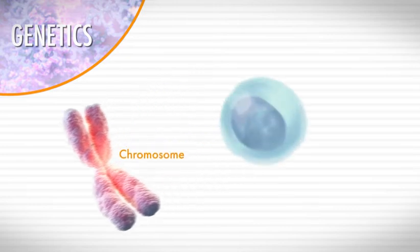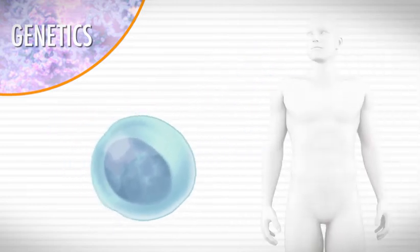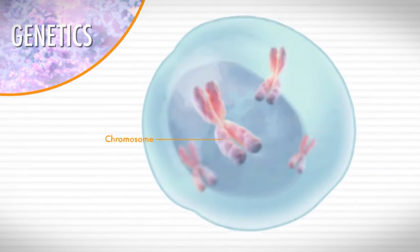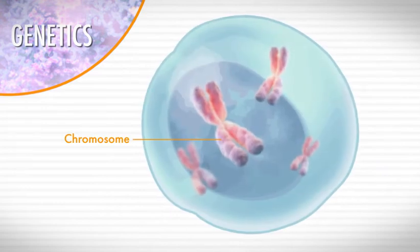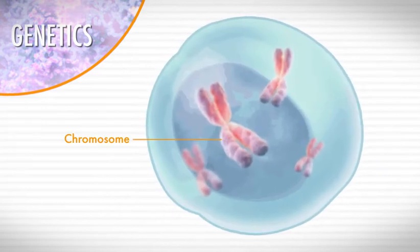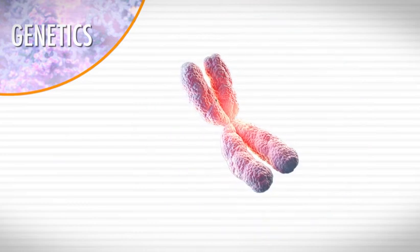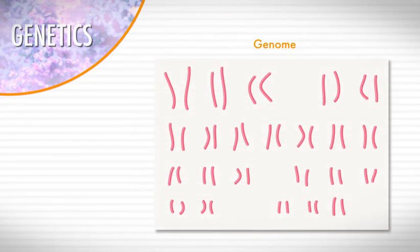It is found in every cell of your body, organized into structures called chromosomes. Every living organism has a set of chromosomes. This set of chromosomes is referred to as the genome, and it is the genome that doctors look at to get the full picture of a patient's disease.